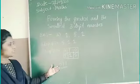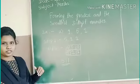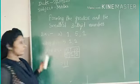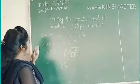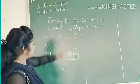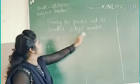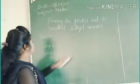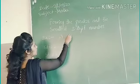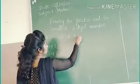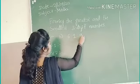We will write 511 like this. This is the greatest number. Let's take one more example. The given digits are 6, 1, 9.